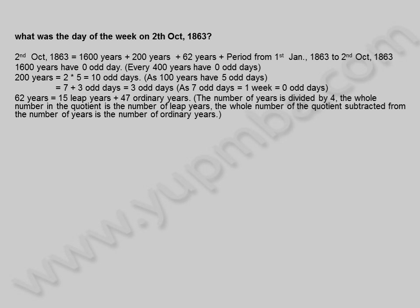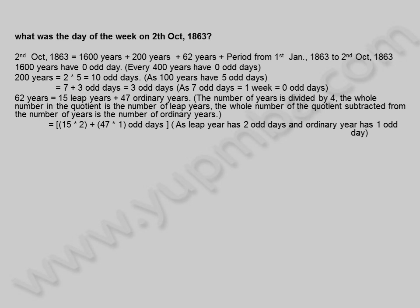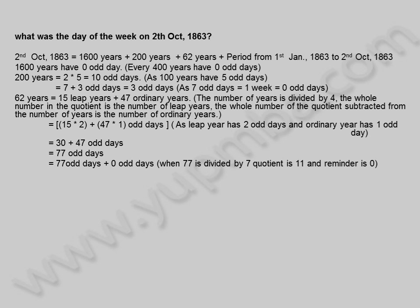62 years is equal to 15 leap years plus 47 ordinary years. The number of years is divided by 4; the whole number in the quotient is the number of leap years, and that subtracted from the number of years gives the number of ordinary years. This equals 15 into 2 plus 47 into 1 odd days, as a leap year has 2 odd days and an ordinary year has 1 odd day. That equals 30 plus 47 equals 77 odd days. When 77 is divided by 7, quotient is 11 and remainder is 0, giving 0 odd days.